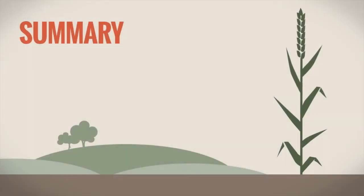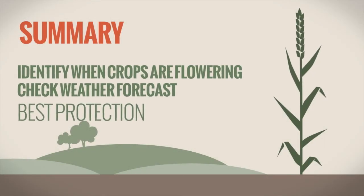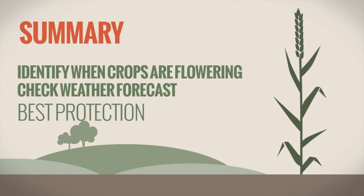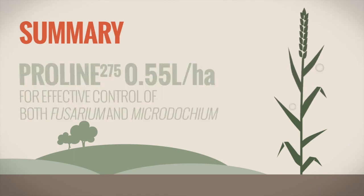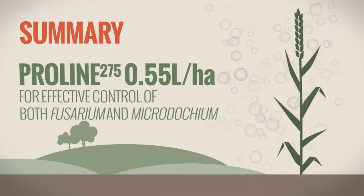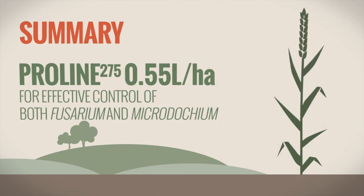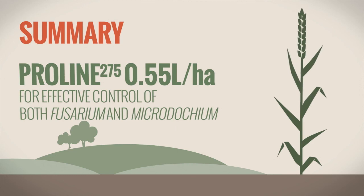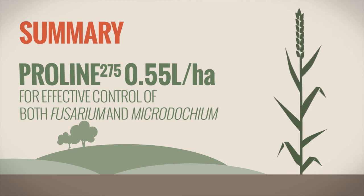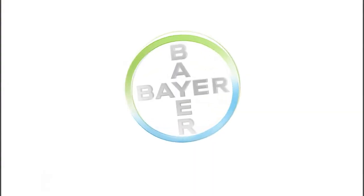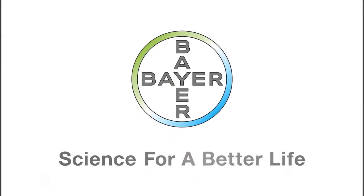In summary, identify when crops are flowering and check the weather forecast to time sprays in order to provide the best protection. Spray a minimum of 0.55 litres per hectare of Proline 275 for effective control of both Fusarium and Microdocium. Bayer Crop Science.